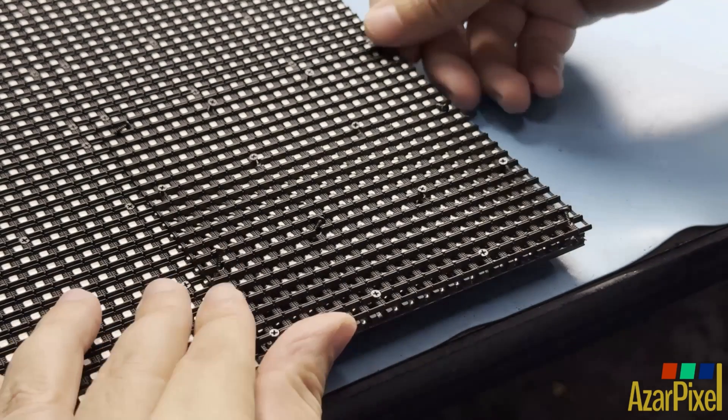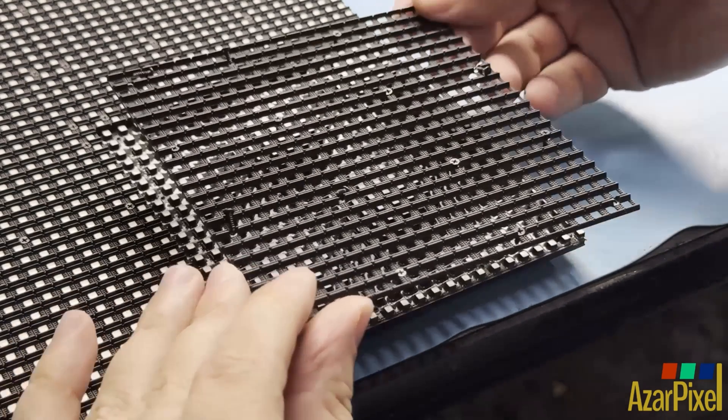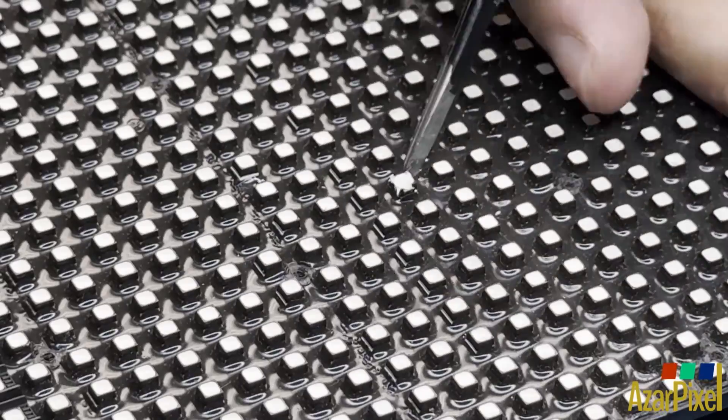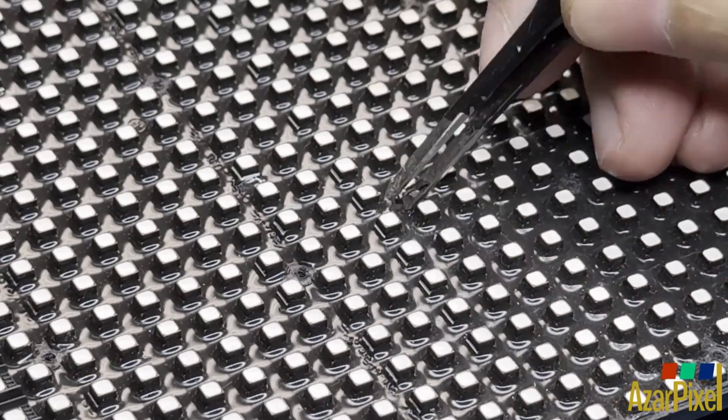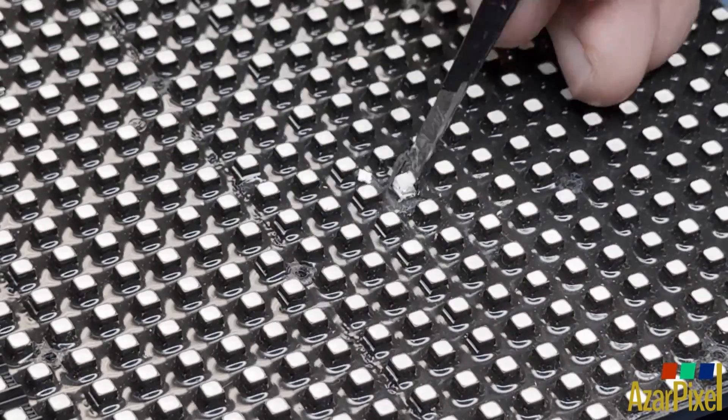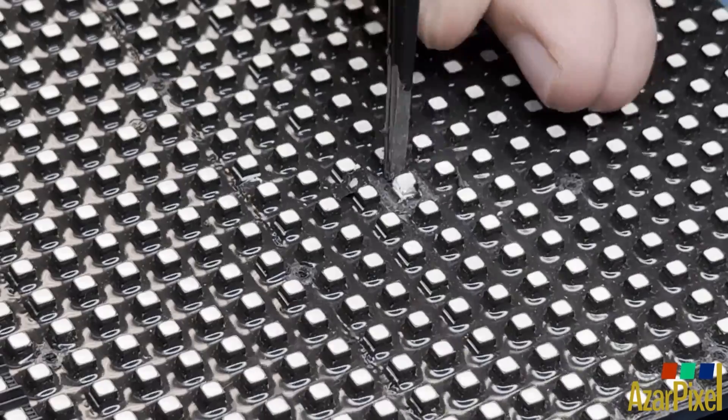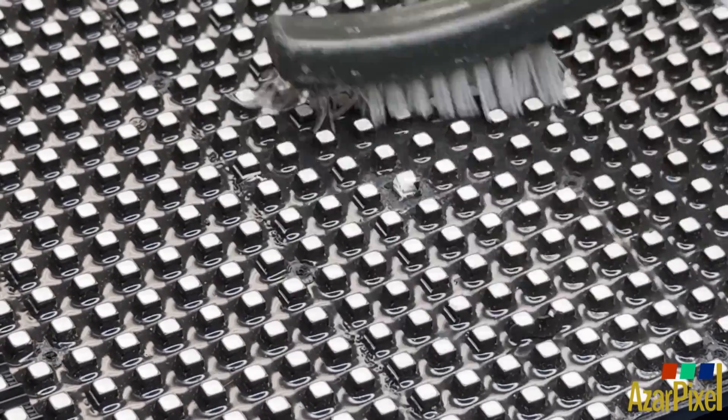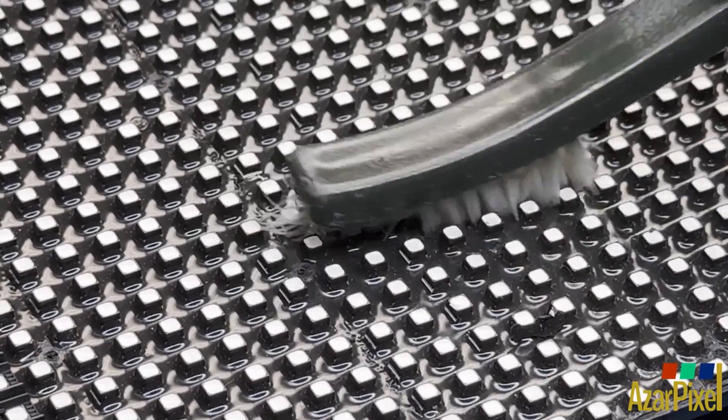The technician begins the service of the Triton Visual Technology 6.8 millimeter outdoor LED module by unscrewing and removing the shader. Then the conformal coating surrounding the LED is scraped off and the area is cleaned.